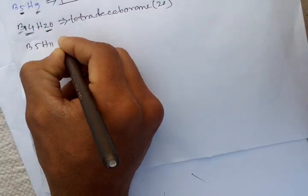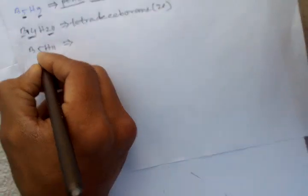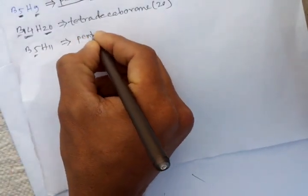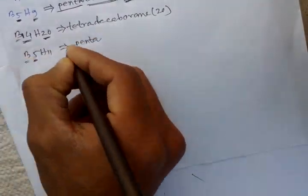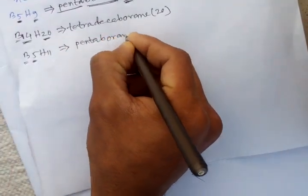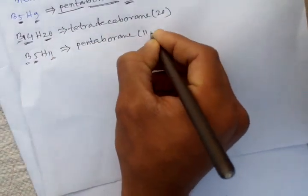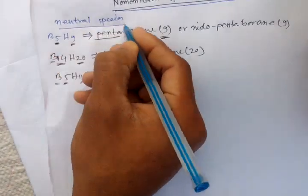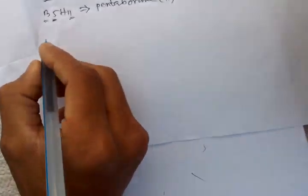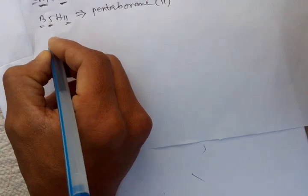Another one: B5H11. The number of boron atoms is 5, which is penta, then boron, so pentaboron, and the number of hydrogen atoms is 11, pentaboron(11). The first category is neutral species, and the second one is charged species.